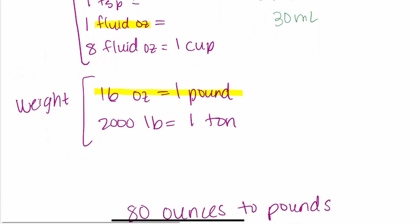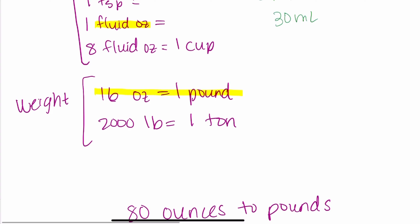So moving on then to our important weight conversions. 16 ounces is equal to one pound and 2,000 pounds is equal to one ton.